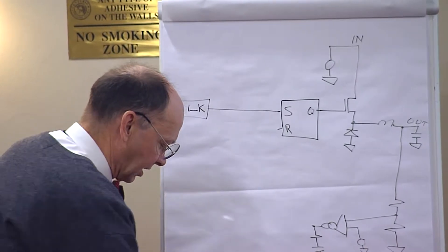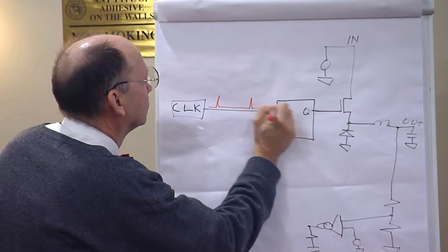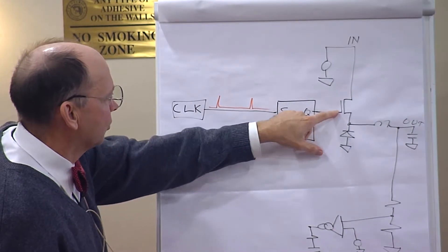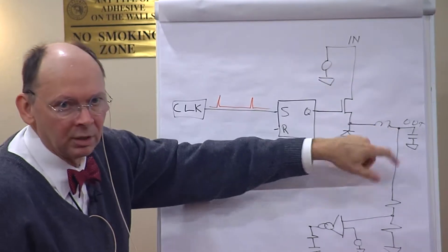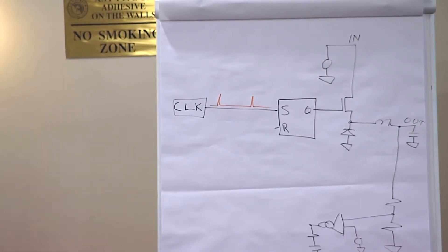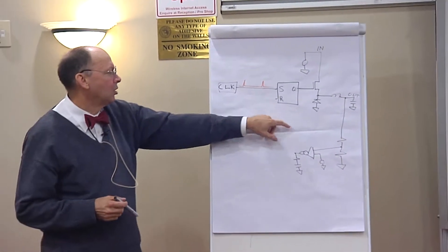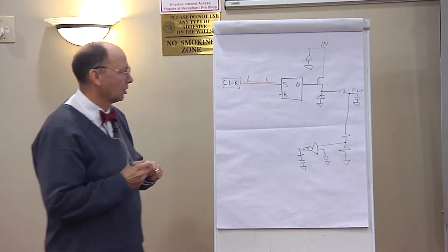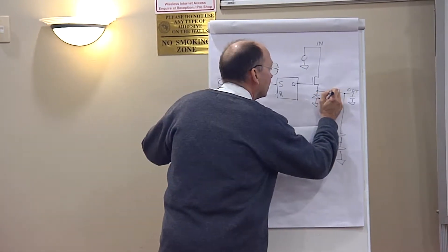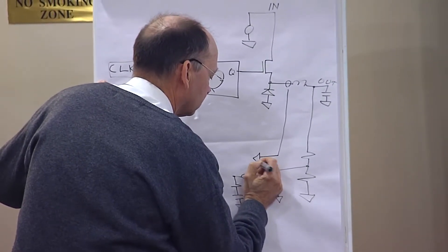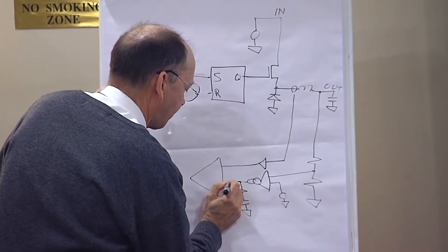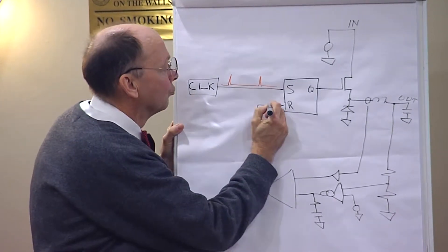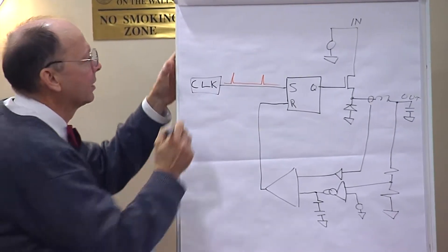The flip-flop is driven by a clock - a series of pulses that sets the flip-flop. A clock pulse comes in, sets the flop, output goes true, the switch turns on, the inductor is connected between input and output. The voltage drop across the inductor makes the current rise. The flip-flop is reset once the inductor current rises up to a value proportional to the voltage on the output of the error amplifier. To do that you need to sense the inductor current - there's a current sense amplifier. Once the inductor current ramps up to that proportional value, you reset the flip-flop.